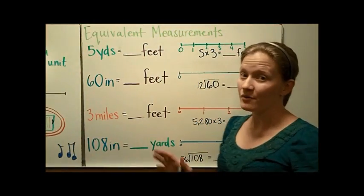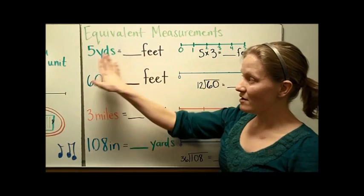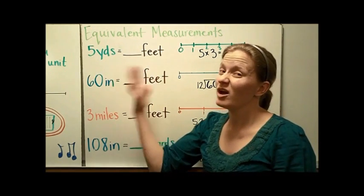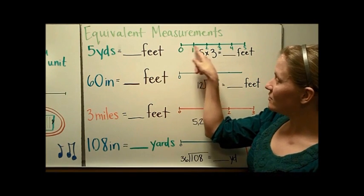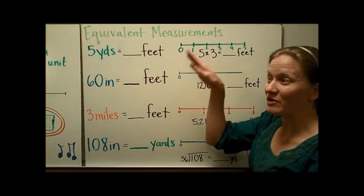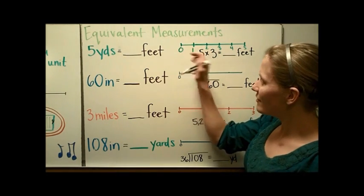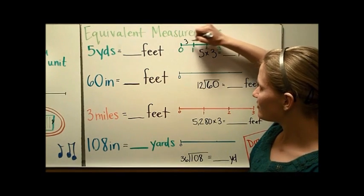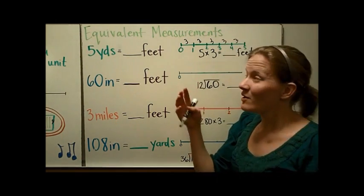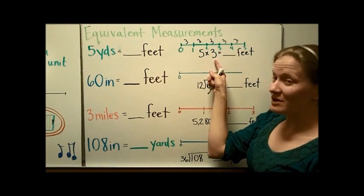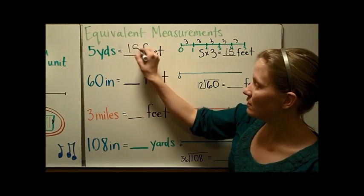Now let's use those relationships to find equivalent measurements between units. If you have to figure out how many feet are in 5 yards, draw a picture — a model is going to help you best. I've drawn 5 yards marked off with 5 sections. Every single one of those yards is made up of 3 feet: 3 feet, 3 feet, 3 feet, 3 feet, 3 feet. So I need to multiply — 5 yards times 3 feet in each gives me 15 feet equal to 5 yards.